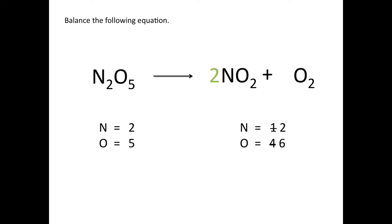We've balanced the nitrogen, but now we have a problem with oxygen — five oxygen atoms on the reactant side and six on the product side. That's an odd number on one side and an even number on the other, which can be tricky. Every now and then you need to go back and forth a little. I'll try to get an even number of oxygen atoms on the reactant side by placing a 2 in front of N2O5.